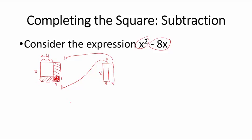So this x minus 4, this square. The area of that square is x squared minus 8x plus the 16 square units that we subtracted.